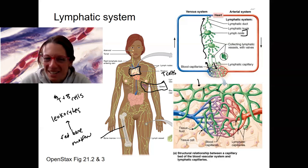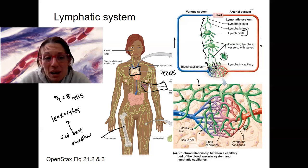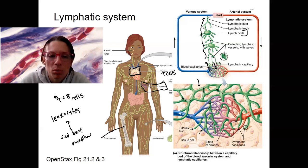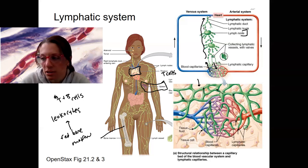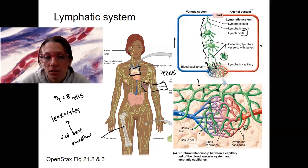The lymphatic system is responsible for immune function — fighting off infection. The immune system would actually include the skin, mucous membranes, all that stuff — not just the white blood cells, but also the barriers for disease. All of that is part of the immune system. It's a huge topic in terms of immune defenses and immune responses, which is why there's a whole chapter in your book.